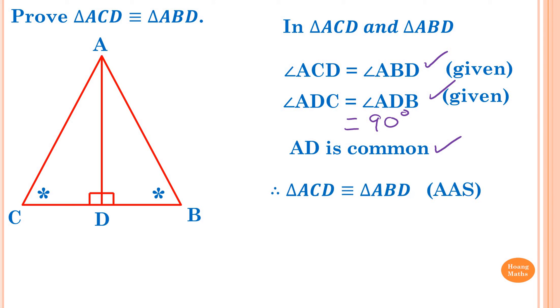Therefore triangle ACD is congruent to triangle ABD by Angle Angle Side (AAS). Thank you so much for watching.